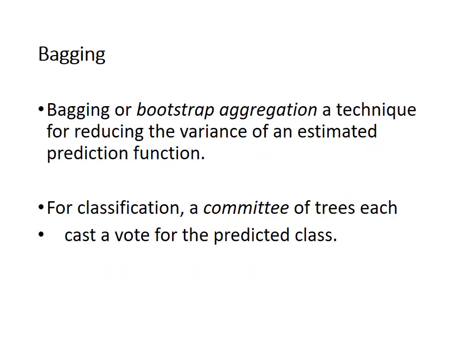So what is bagging? Bagging, or bootstrap aggregation, is a technique for reducing the variance of an estimated prediction function. The task of bagging is to reduce the variance. For classification, a committee of trees each cast a vote for the predicted class, and the one getting the majority vote is selected.